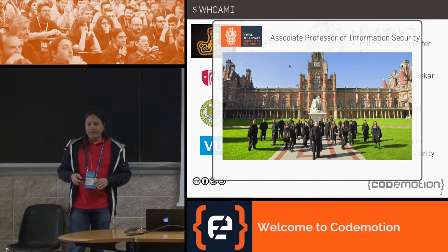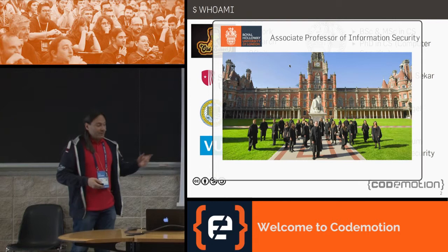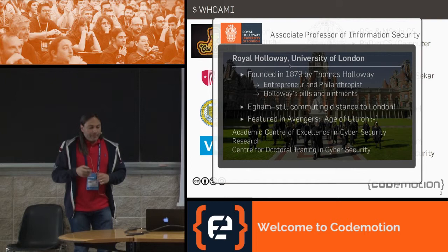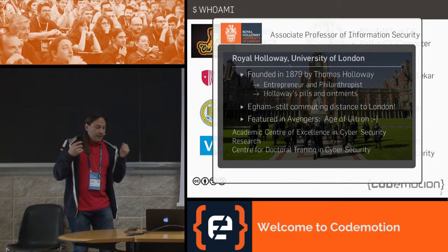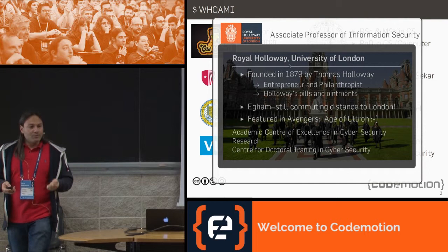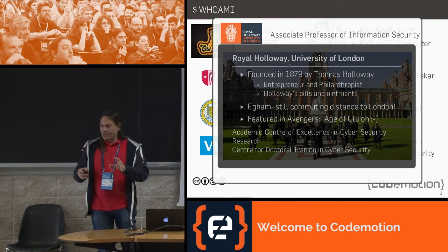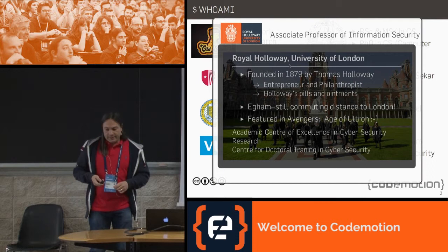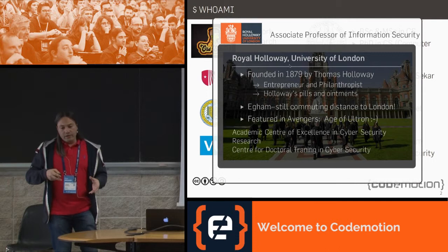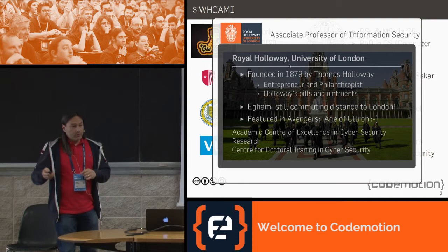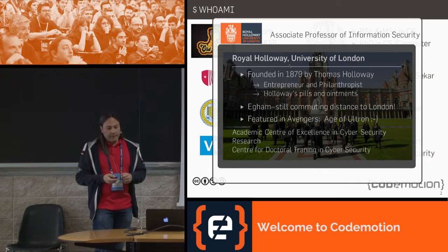We have a very famous choir that tours the world. Royal Holloway was founded in the late 1800s by Thomas Holloway — entrepreneur and philanthropist known for pills and ointment, which it turns out actually contained paracetamol, so he was curing people. Royal Holloway is one of 13 academic centres of excellence in cybersecurity research in the UK, and we host one of two centres for doctoral training in cybersecurity — the other was awarded to Oxford.